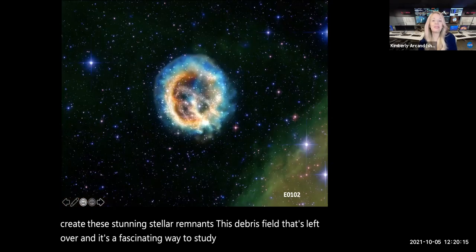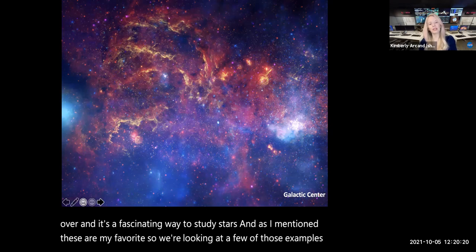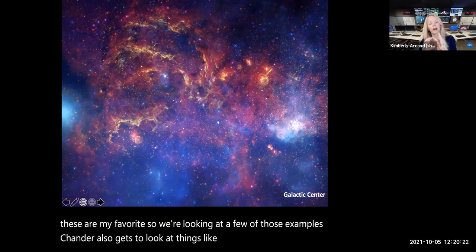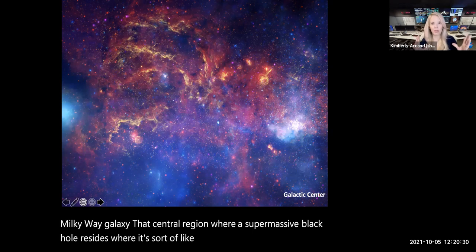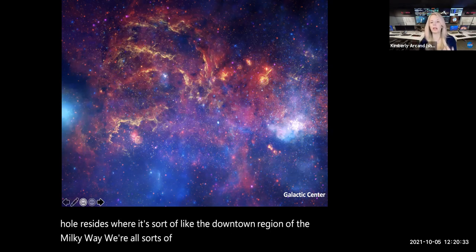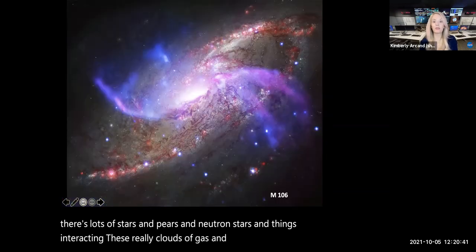I really love planetary nebulas by the way, but probably my favorite kind of object in the entire universe is what I call exploded star or supernova remnant. These are stars that are much more massive than our sun that as they start to age, they run out of fuel and then their cores collapse and they explode their guts out all over the universe and create these stunning stellar remnants, this debris field that's left over. And it's a fascinating way to study stars. And as I mentioned, these are my favorite. So we're looking at a few of those examples. Chandra also gets to look at things like the core of our Milky Way galaxy, that central region where a supermassive black hole resides, where it's sort of like the downtown region of the Milky Way.